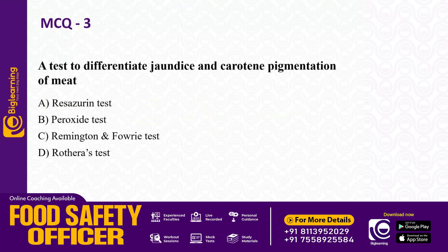Next question: a test to differentiate jaundice and carotene pigmentation of meat — options are resorein test, peroxide test, Remington and Fowdy test, or Rotera test. The answer is Remington and Fowdy test.